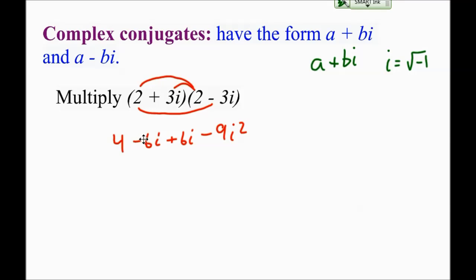Now, when I go to combine these things, I have a minus 6i and a plus 6i. So those cancel out to be 0. And another important fact to remember is that i squared is negative 1. So what this becomes is 4 minus 9 times negative 1. Well, 9 times negative 1 is just plus 9. And that gives me 13.